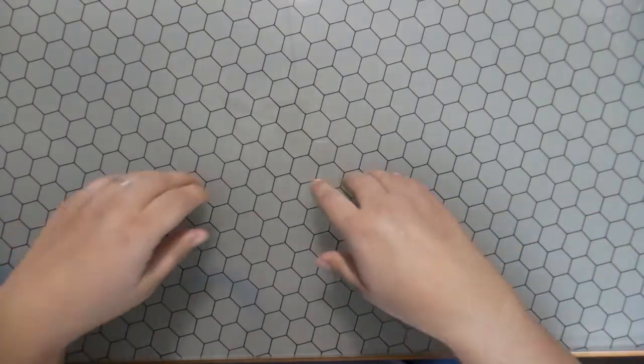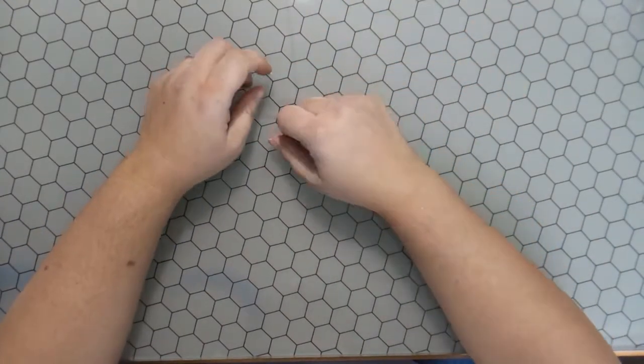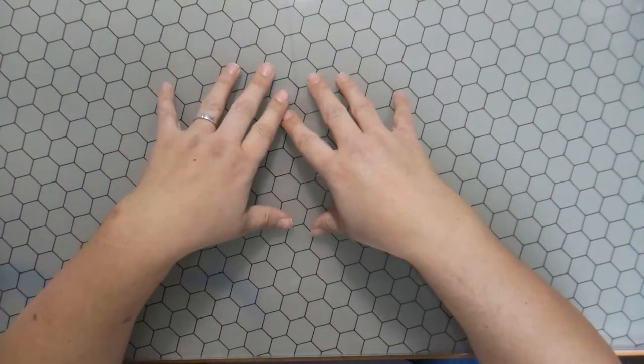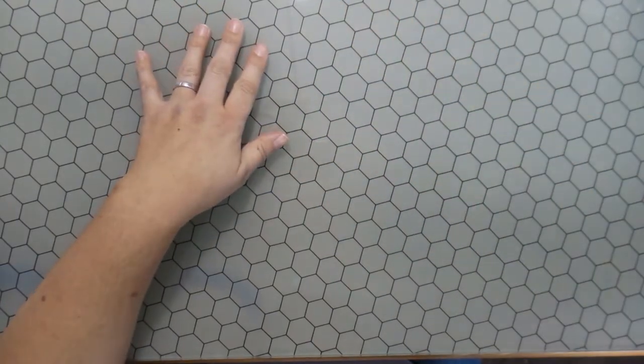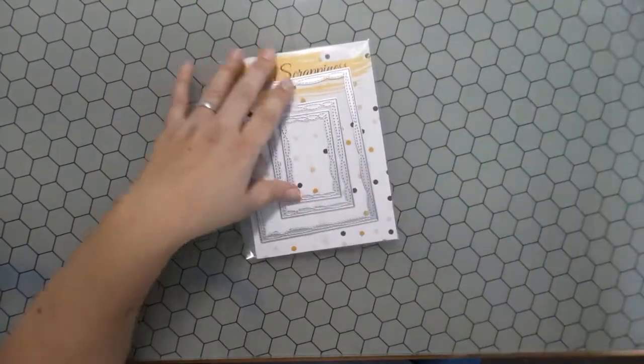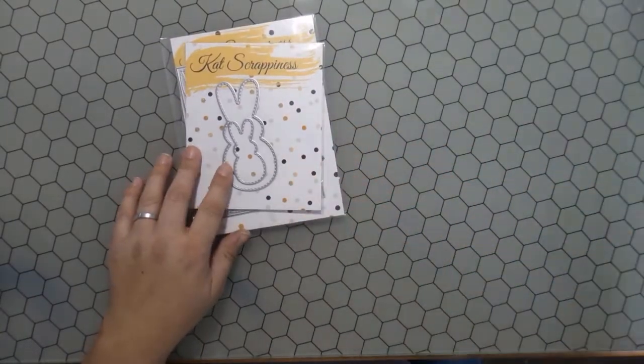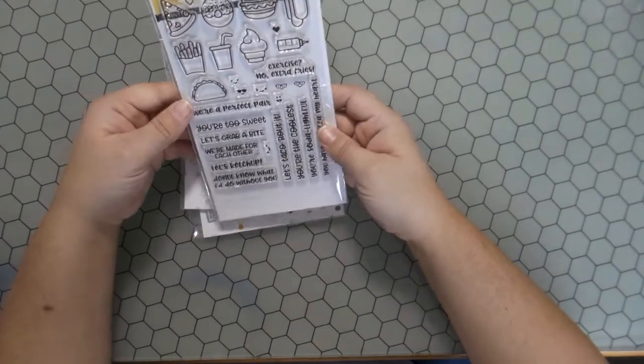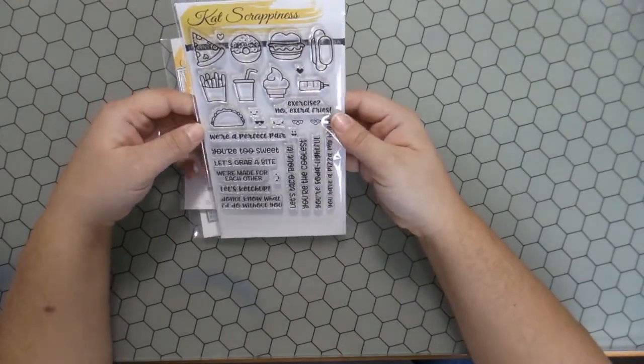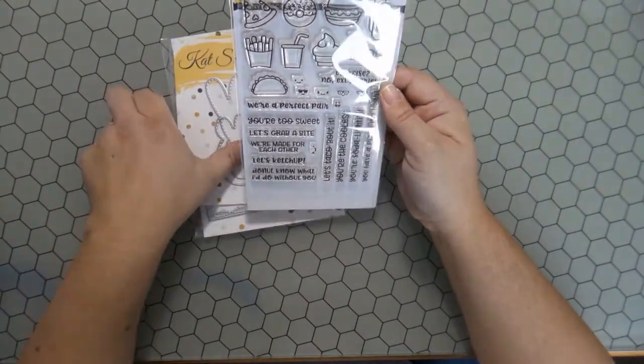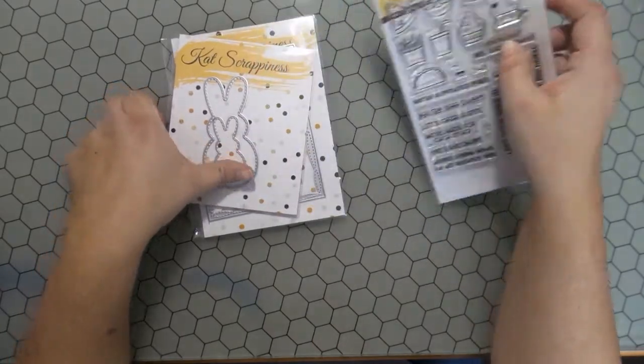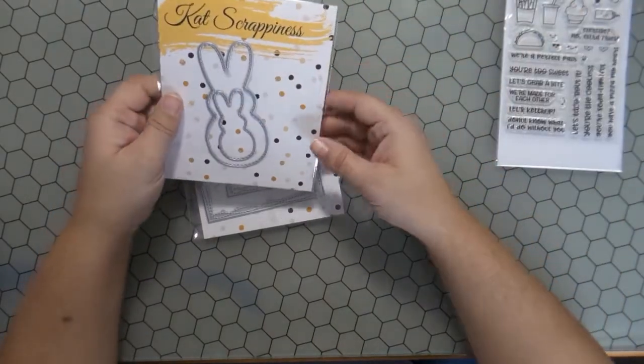Hi, this is Hannah Rubenstahl of Cat Scrappiness. Today I'm going to walk you through doing a bunny spinner card. This is a bunny that spins inside of another bunny. We are going to be using the Stitched Easter Bunny Outline die set from Cat Scrappiness as well as her wonky wavy stitched rectangle die and the new Punny Snacks stamp set.